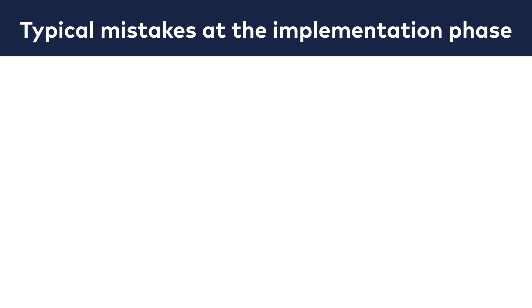Number 1: You should assign your A and B versions randomly. When you use a service like Optimizely or Google Optimize, this won't be an issue. These tools do the randomization for you.